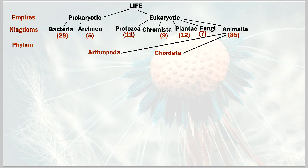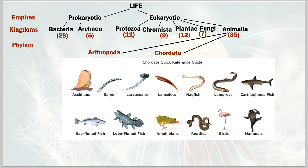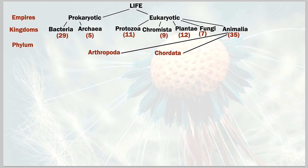Then we have chordata — you'll recognize a lot more here. We see a huge variety from simplified life forms to more advanced ones such as mammals, reptiles, and birds. The third phylum we'll discuss is mollusca — the mollusk phylum, not kingdom.